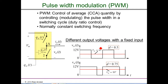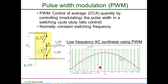Another example: with a fixed input voltage and a desired controlled variable output, if you want 6 volts from 12 volts you keep the duty ratio T_on over T_S at 0.5, getting exactly half the input voltage. If you want a higher output voltage, you increase the pulse width — for example, D equals 0.75 gives an average output of 9 volts.